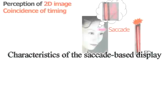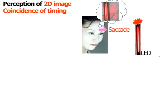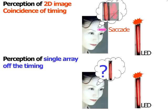This display will only show 2D images when the timing of the saccade coincides with the timing of the flicker. If the timing is off, observers will perceive only the light array instead of 2D images.